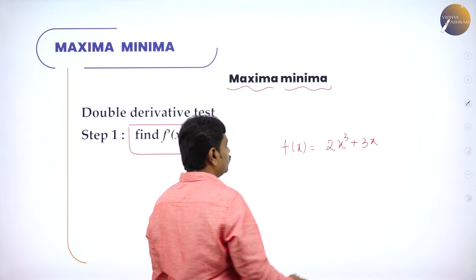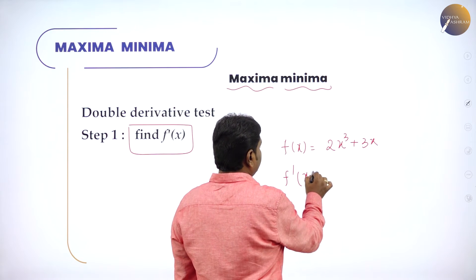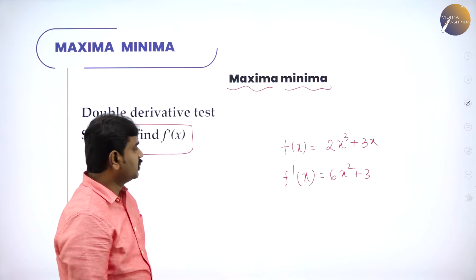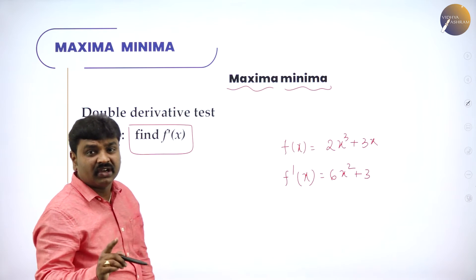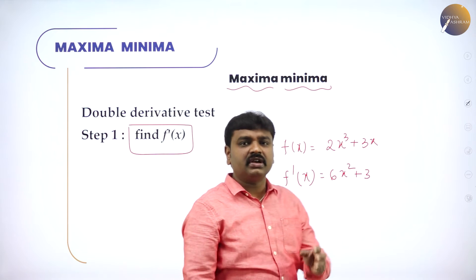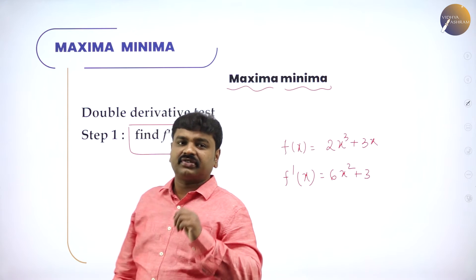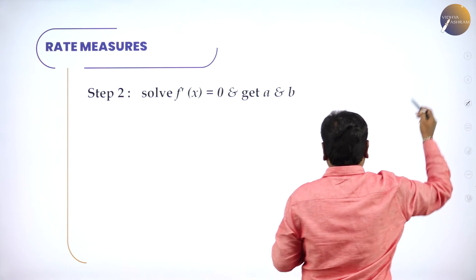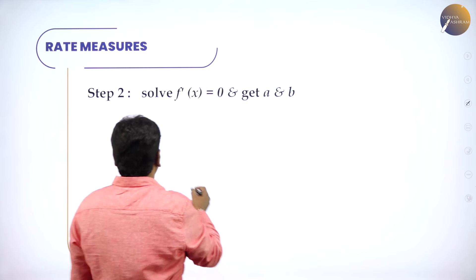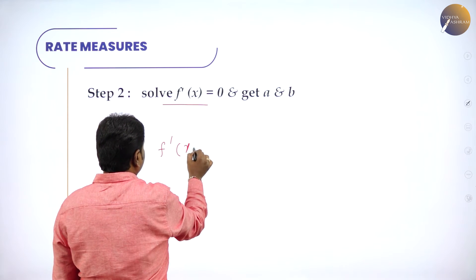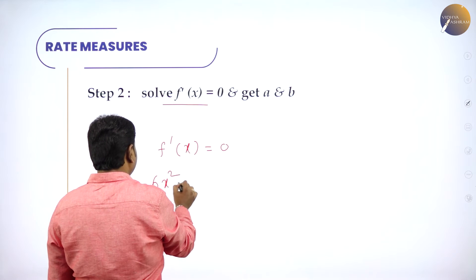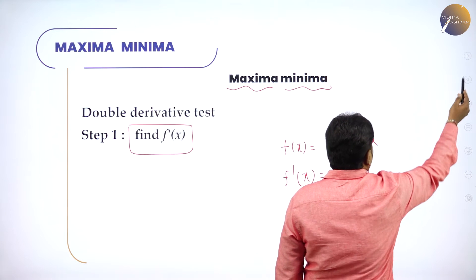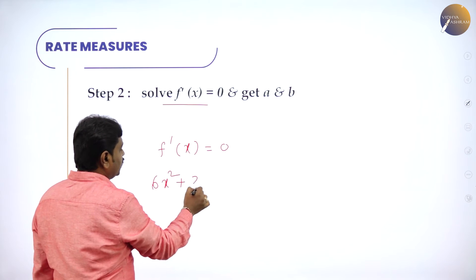Find f'(x) by differentiating both sides, so it becomes 6x² + 3. Step one is done: find f'(x), differentiate the given function. Step two: equate f'(x) to 0. After you find f'(x) = 6x² + 3, equate it to 0: f'(x) = 0. Solve this — we get 6x² + 3 = 0.